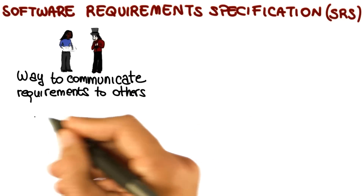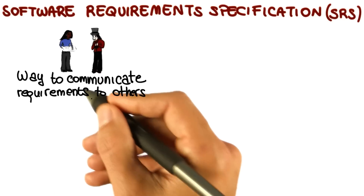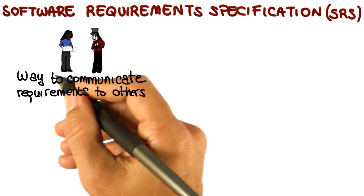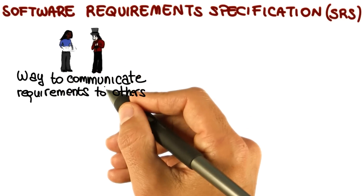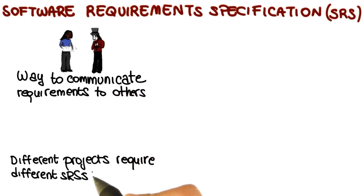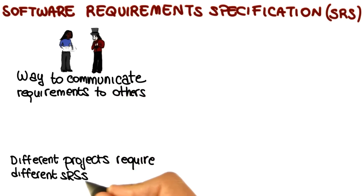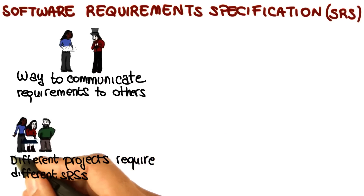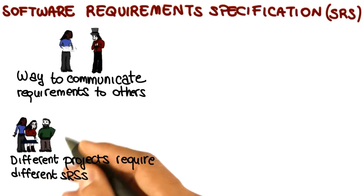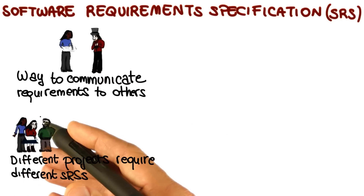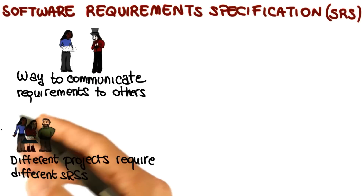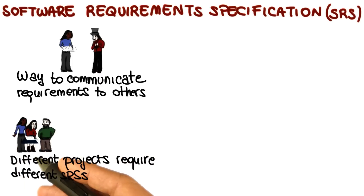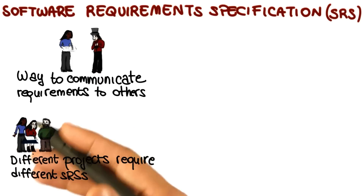For example, they represent a common ground between analysts and stakeholders. Note, however, that different projects might require different software requirement specifications, so you need to know your context. For example, the SRS document that you have to create for a small project performed by a few developers can in most cases be a concise and informal one.